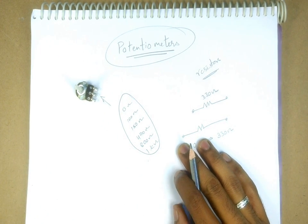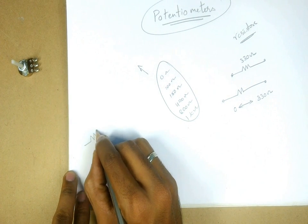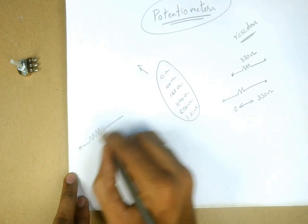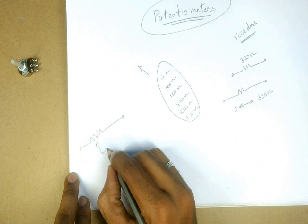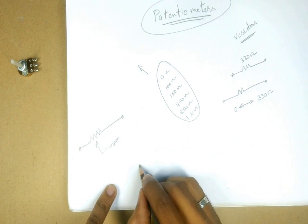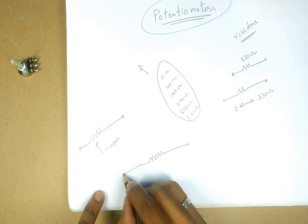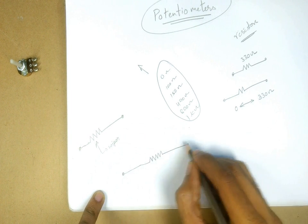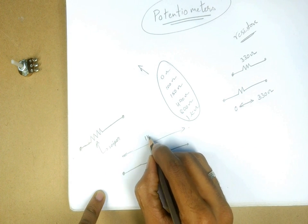How this potentiometer works: it consists of a resistive path having a wiper at a certain position. Depending on the position of this wiper, the resistance value changes. For example, this is a resistive path, and the resistance between the two ends is about 1 kilo ohm.